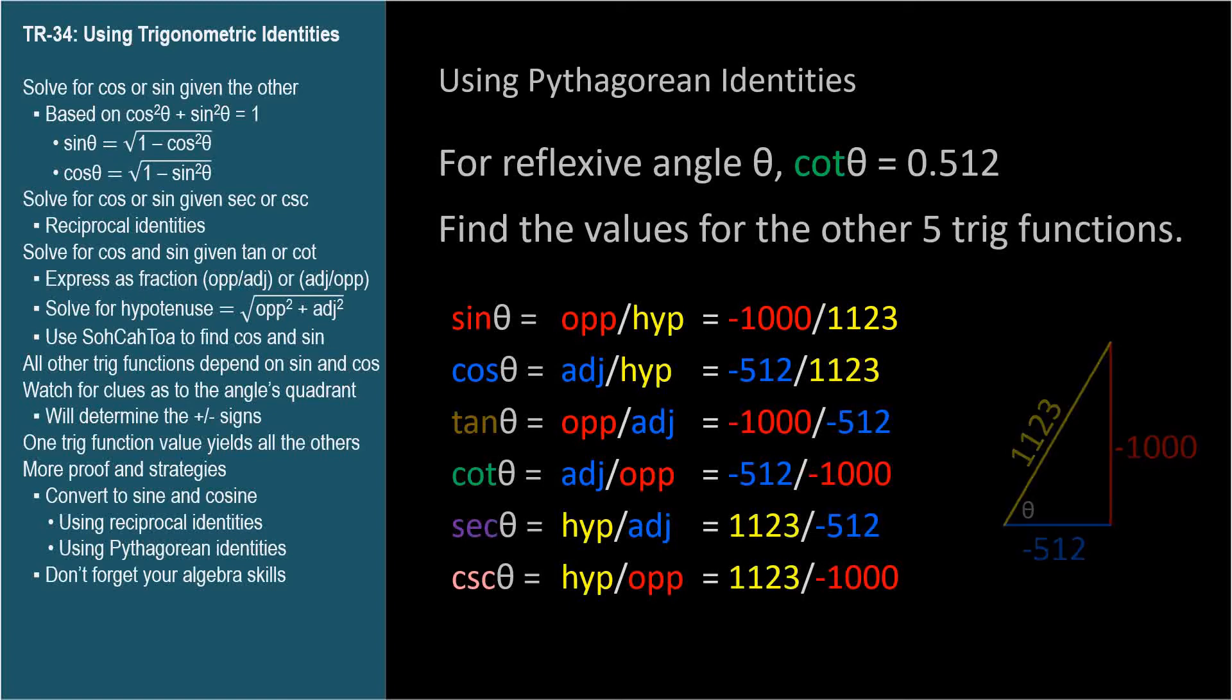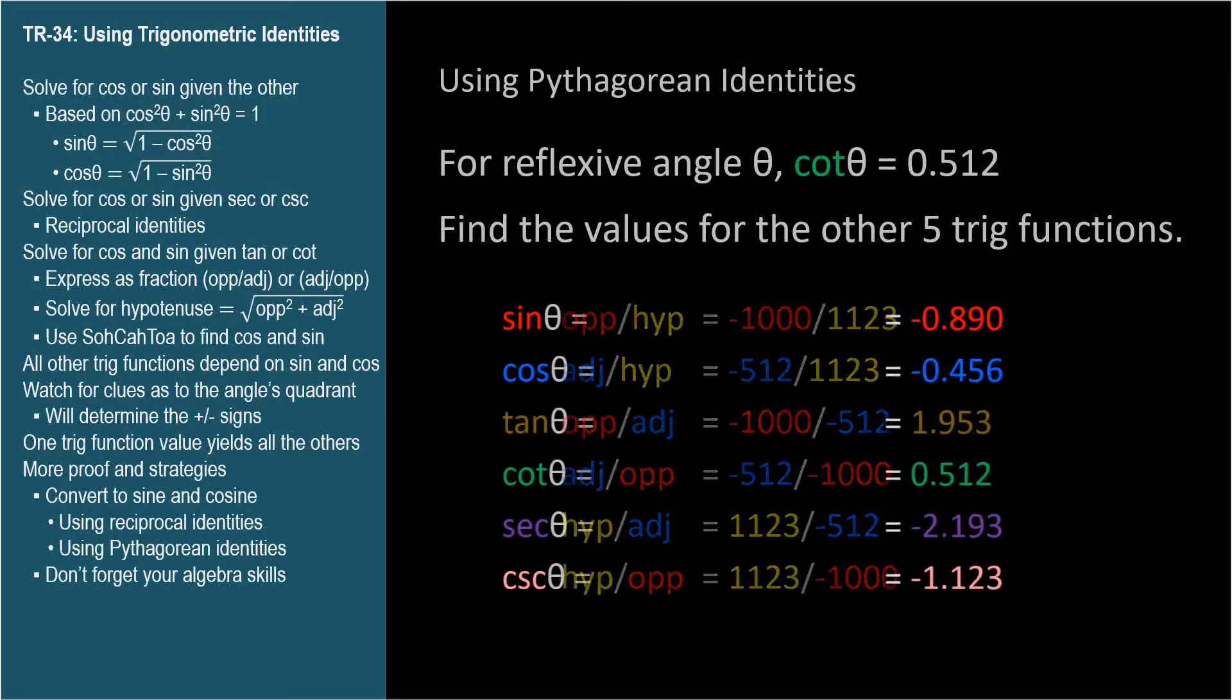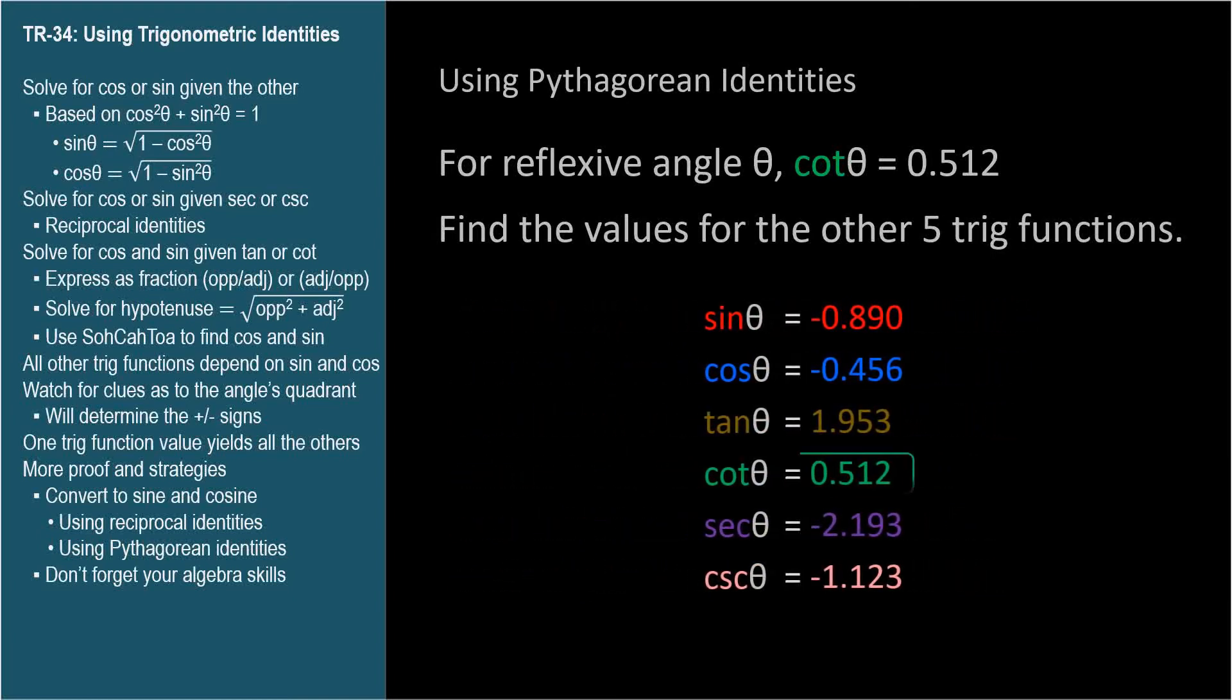Now we can easily fill in all of the trig function values using SOHCAHTOA and reciprocal identities. This should look familiar we covered it back in TR-14, and we can check that we get back the cotangent value we were given.